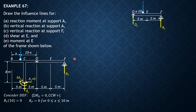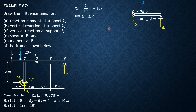Beyond D, from 10 to 20 meters, the unit load is on this segment. The equation becomes RF times 10 equals 1 times (x minus 10), so RF equals (1/10)(x minus 10) for 10 ≤ x ≤ 20 meters. There are two formulas for RF.